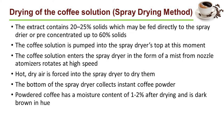Finally, the extracted and concentrated coffee solution should be dried. Using the spray drying method, the extract contains 20 to 25 percent solids, which may be fed directly to the spray dryer or pre-concentrated up to 60 percent solids. The coffee solution is pumped into the top of the spray dryer, entering in the form of a mist from a nozzle atomizer rotating at high speed. Hot dry air is forced into the spray dryer to dry the particles. The bottom of the spray dryer collects the instant coffee powder, which has a moisture content of 1 to 2 percent after drying and is dark brown in hue.